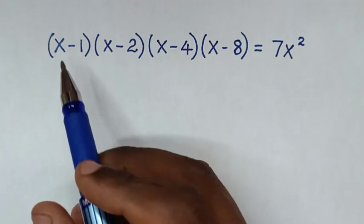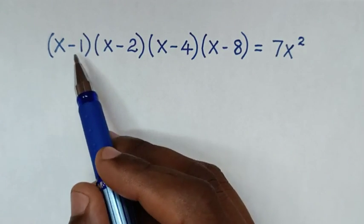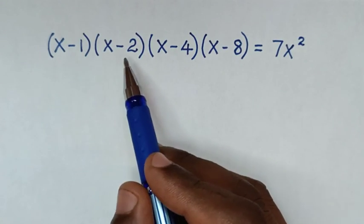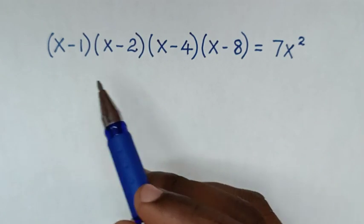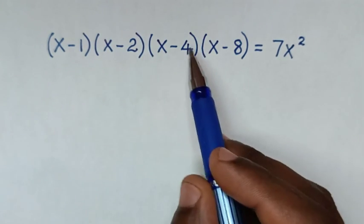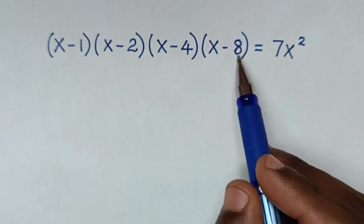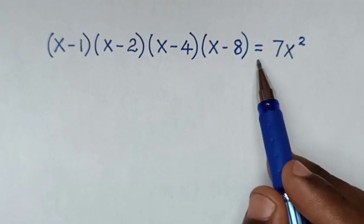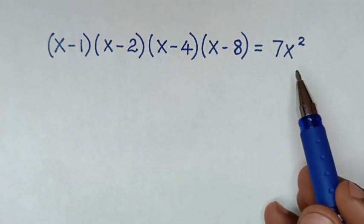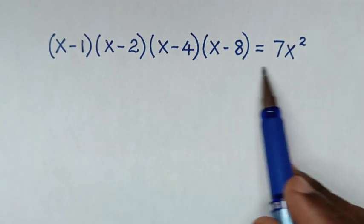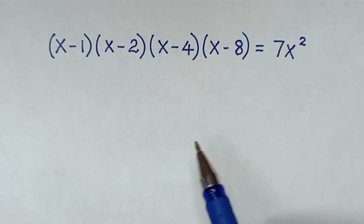Hello. How to solve (x minus 1)(x minus 2)(x minus 4)(x minus 8) equals 7x squared — to find the value of x from this equation. So first, in the first step,